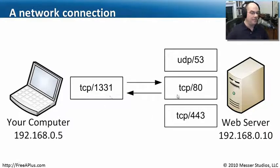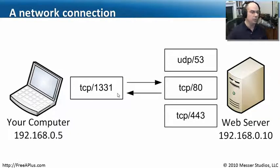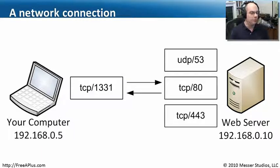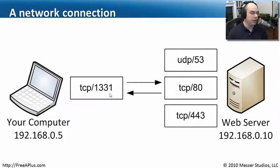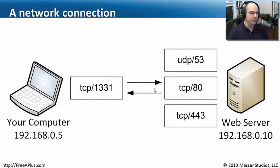My computer, which may be sending traffic out to port 80, uses a port number that it just chooses — let's say port number 1331. It's chosen automatically by my computer; I don't really make that decision. My computer does it for me, and it sends a packet off to the web server saying, 'this is coming from 192.168.0.5 over the TCP protocol on port number 1331 — hey, port 80, are you there?' And the web server will respond back: yes, I'm here, here's the answer to your question.